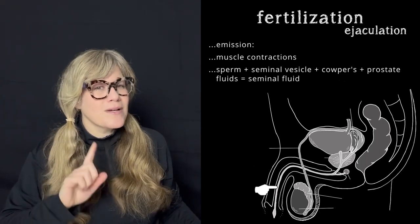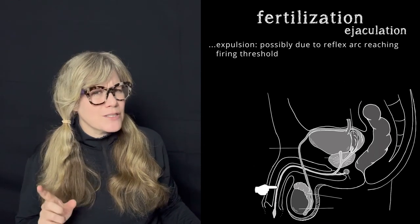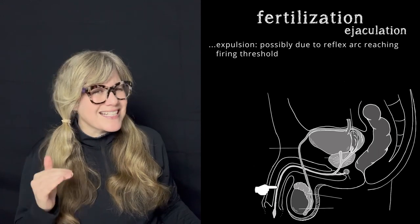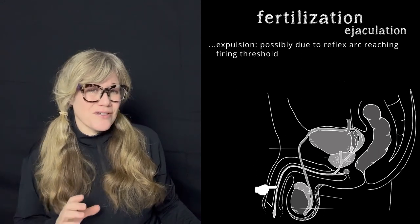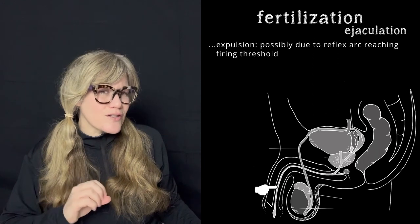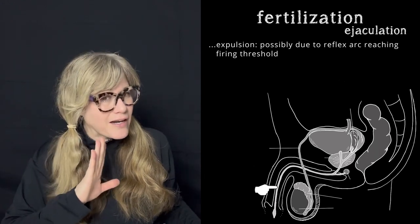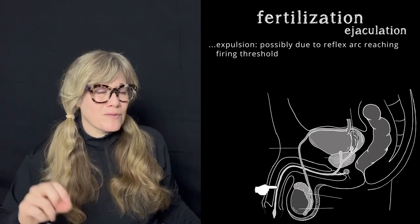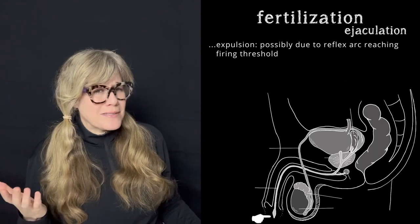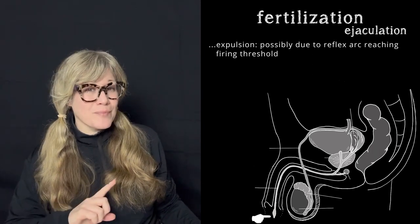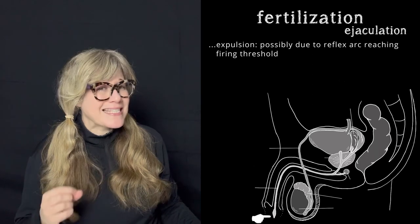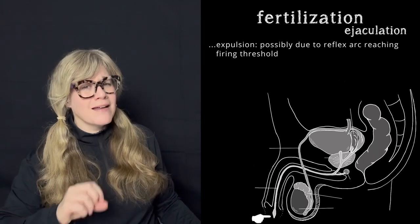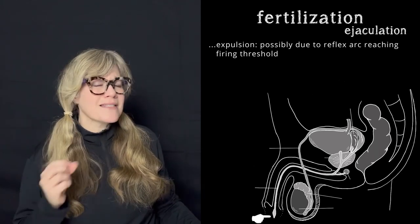Then phase two, expulsion, kicks in — possibly due to the reflex arc in the spinal nerve bundle reaching a firing threshold, though the exact triggering mechanism is not very well understood. Expulsion occurs when the pelvic floor musculature, still under autonomic control, rhythmically contracts to propel the seminal fluid out of the urethra through the penile opening. In our example, the seminal fluid is expelled from a consenting age-appropriate adult urethra into a consenting age-appropriate adult vagina for the mutually desired purpose of procreating.